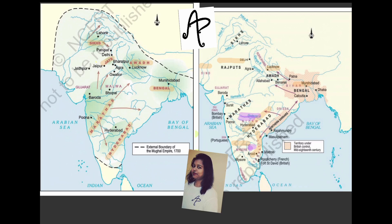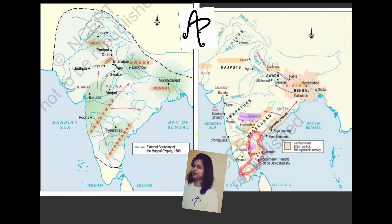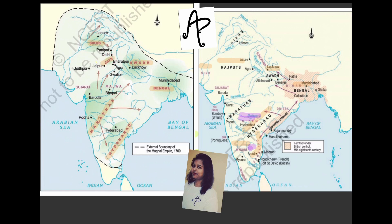Let's quickly revisit the states we have done on the map so that once we do the theory, we roughly know what region we are talking about. For the first set — successor states — we have already talked about Hyderabad, Bengal, Awadh, and the Carnatic. For the next set — the new states — we talked about the Sikhs, the Jats, and the Marathas in the previous video. We also covered Afghans and Rohilkhand.